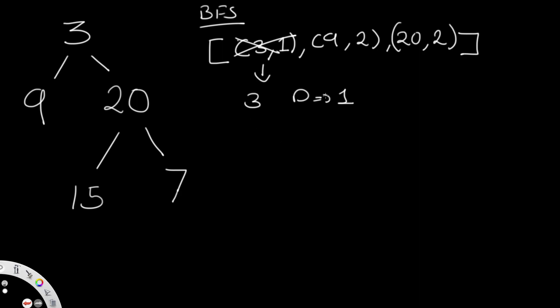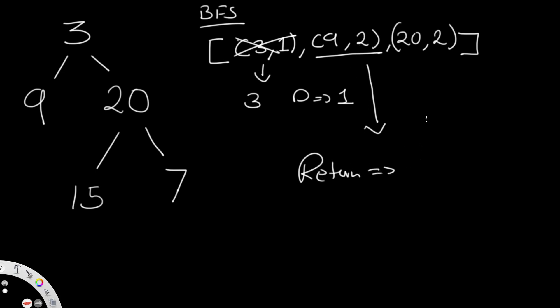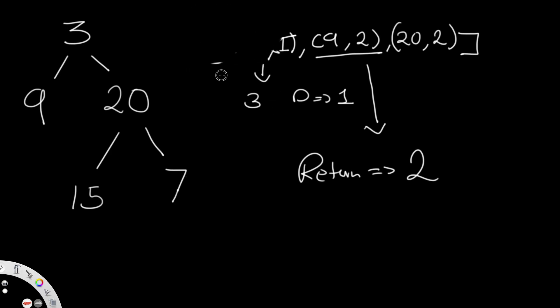We go on to the next value and pop out whatever is at the zeroth index — that's node 9 with depth 2. We notice that node 9 does not have a left child and does not have a right child. That means we are at a leaf node. In that case, we directly return the depth, which is 2. That's how breadth-first search works — we keep going until we reach the first leaf node.